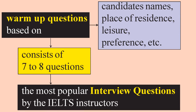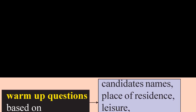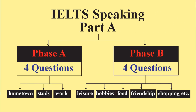In this part, simple warm-up questions based on candidates' names, place of residence, leisure, preference, etc. will be asked. It consists of seven to eight questions. This part covers the most popular interview questions which are normally asked by the IELTS instructors. In the exam, this section is divided into two categories known as Phase A and Phase B. Phase A has four questions related to hometown, study, and work. Phase B has another four questions related to leisure, hobbies, food, friendship, shopping, etc.